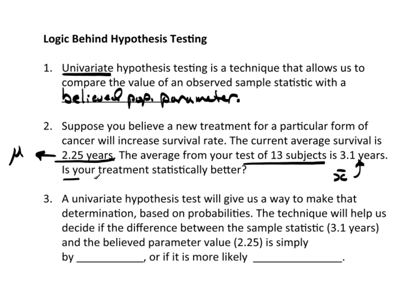Now, you don't need a math degree to figure out that 3.1 is bigger than 2.25 — it's kind of obvious. But does this mean your treatment is really statistically better? This 3.1 years compared to 2.25 is just based on one of a bunch of possible samples of 13. Remember the whole idea of a sampling distribution? A univariate hypothesis test will give us a way to make that determination based on probabilities.